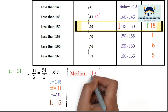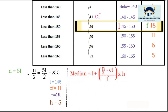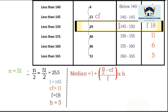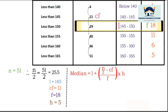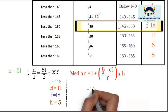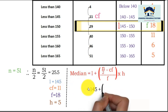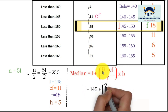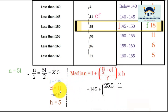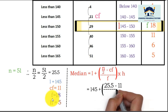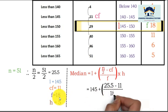Now list the values: l = 145, cf = 11, f = 18, h = 5. Write the formula: Median = l + [(n/2 − cf) / f] × h. Substituting: 145 + [(25.5 − 11) / 18] × 5.